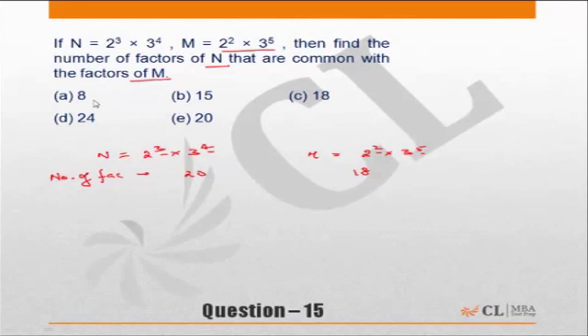That means A is possible, B is possible, C is not possible, D is not possible, E is not possible. You can limit it out of the four choices. If you have some comfort with numbers, you will be straight away able to give the answer.